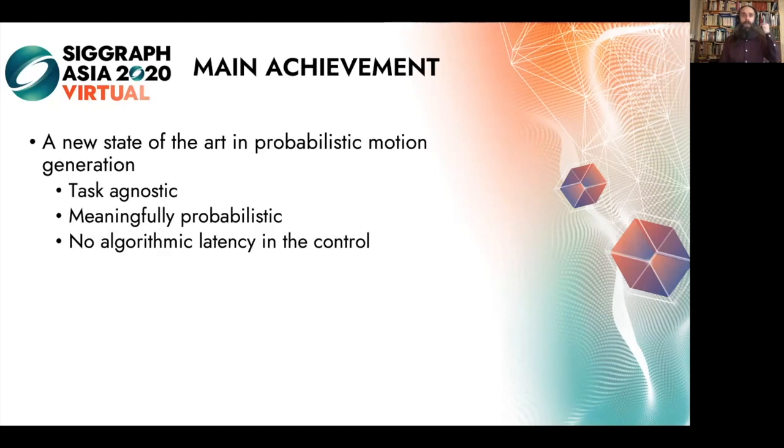Let's sum up. We've achieved a new state of the art in probabilistic motion generation in a manner that's completely task agnostic, doesn't make assumptions about the nature of the motion, and we're able to generate a whole range of meaningfully different behavior from the probabilistic model. We achieve control over the output in a way that does not incur algorithmic latency, so it can be used in interactive scenarios.